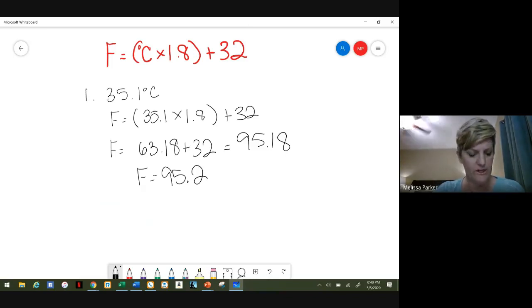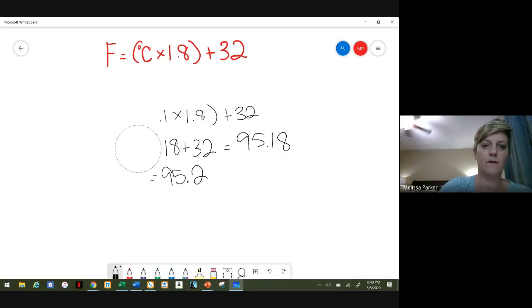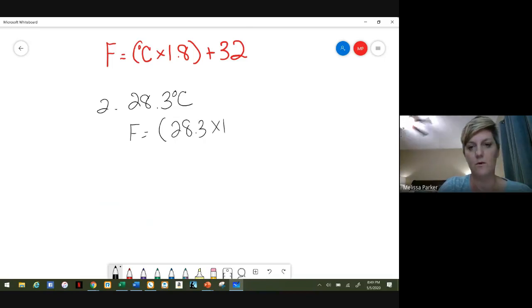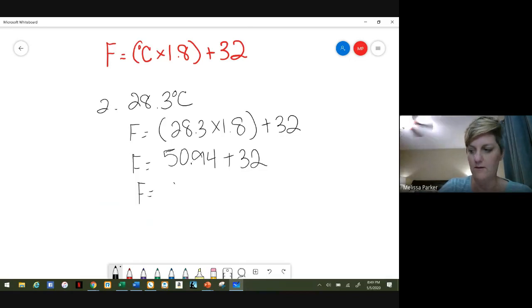Now we're going to do number two. Number two is 28.3 degrees Celsius. So we have Fahrenheit equals 28.3 times 1.8 plus 32. If we multiply 28.3 times 1.8, you get 50.94 plus 32. And then if you add 32, you get 82.94. If we round to the nearest tenth, we're going to get 82.9 degrees Fahrenheit.